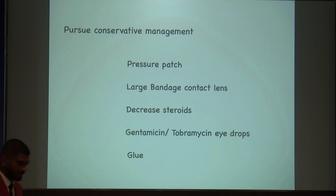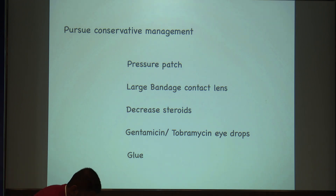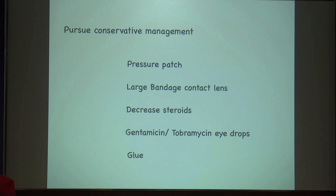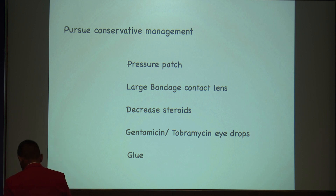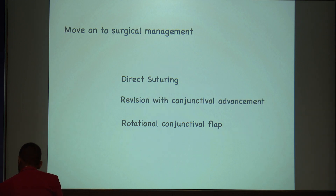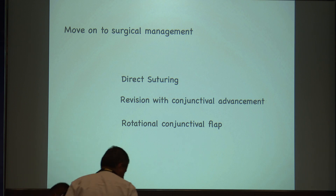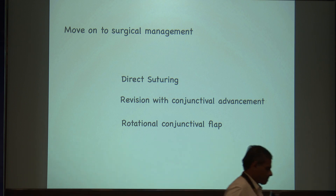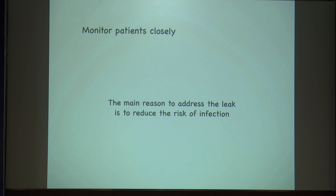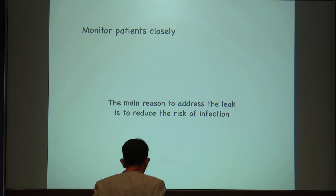For management of bleb leak, first pursue conservative management. If you have a very minimal leak, do a pressure patch or a large bandage contact lens, and decrease the steroids. Gentamicin and Tobramycin drops also help in increasing fibrosis, increasing inflammation and causing healing. Or you can use a fibrin glue. If this is not working or the tear is larger, you have to do direct suturing or revision of conjunctival advancement. Monitor the patient closely as this will reduce the risk of infection.